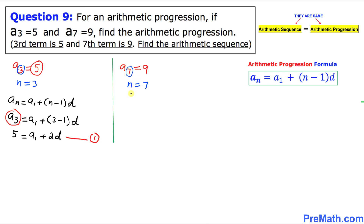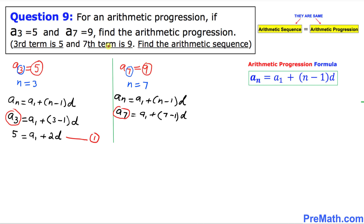Now using the same formula again for the second condition: a sub n equals a sub 1 plus (n minus 1) times d. Here a sub n is a sub 7, and n is 7, so: a sub 7 equals a sub 1 plus (7 minus 1) times d. Since a sub 7 is 9, this becomes 9 equals a sub 1 plus 6d. We call this Equation 2.